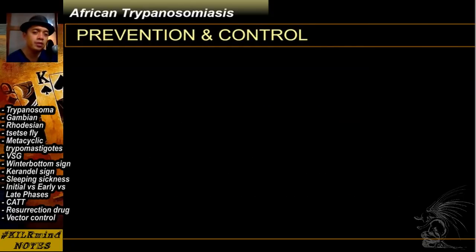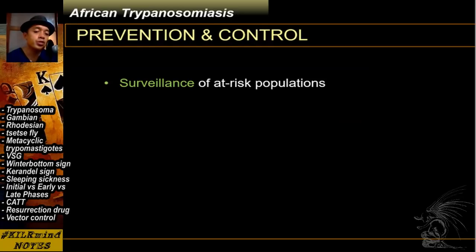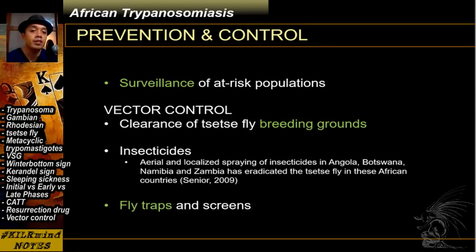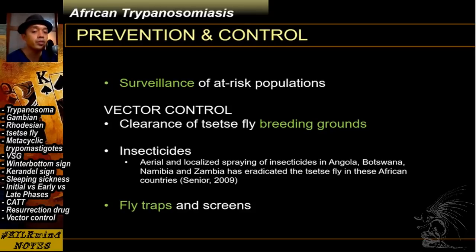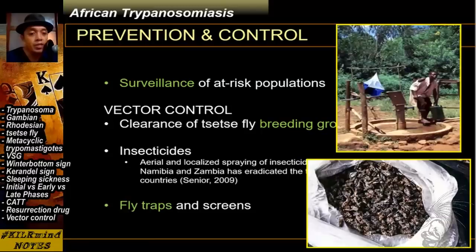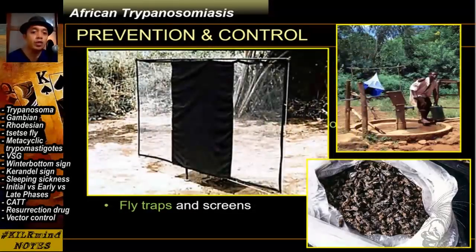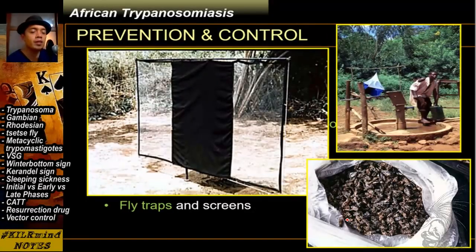To prevent and control African sleeping sickness, surveillance of at-risk populations is one strategy. The biggest successes in Africa have come from vector control — since the tsetse fly is the primary vector, controlling their breeding grounds or reducing their numbers can control the prevalence of African sleeping sickness. Examples include fly traps such as the swinger trap, which swings back and forth to collect tsetse flies, and these control measures have been effective in decreasing the number of cases.